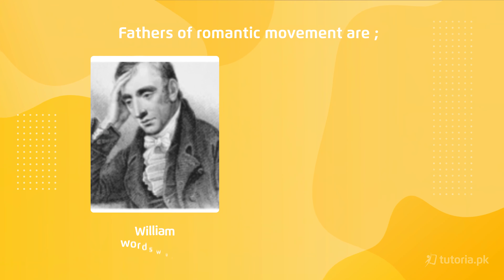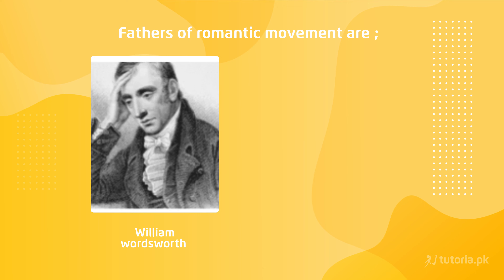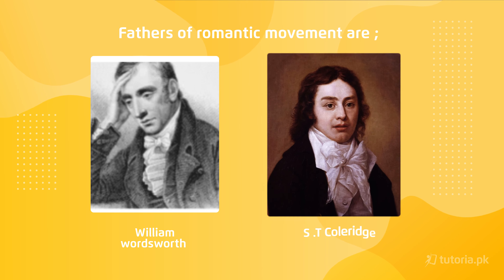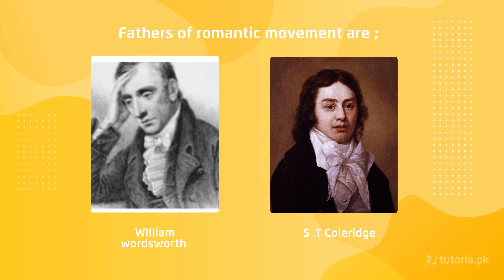Romanticism in English literature started with William Wordsworth and Samuel Taylor Coleridge. These two people were the pioneers of the Romantic movement in English literature. These two poets started the Romantic movement.